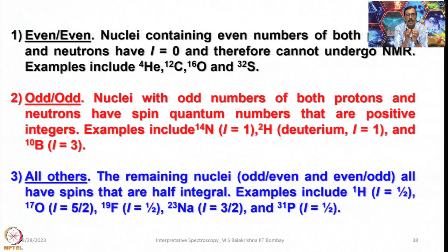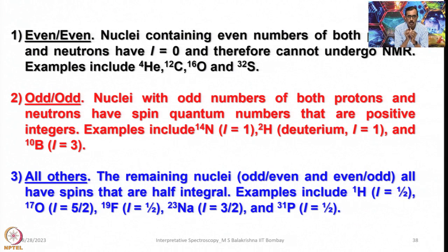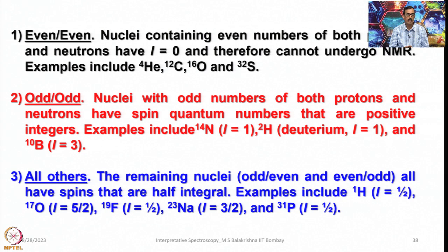Next, odd-odd: nuclei with odd numbers of both protons and neutrons have spin quantum numbers that are positive integers. Examples include ¹⁴N with I = 1, ²H (deuterium) with I = 1, and ¹⁰B with I = 3. All others — nuclei with even/odd combinations of protons and neutrons — have spins that are half-integral. For example, ¹H has I = 1/2, ¹⁷O has I = 5/2, ¹⁹F has I = 1/2, ²³Na has I = 3/2, and ³¹P has I = 1/2. Simply by looking at the number of protons and neutrons in a given atom we should be able to tell whether it is NMR active and, if so, what its I value is.